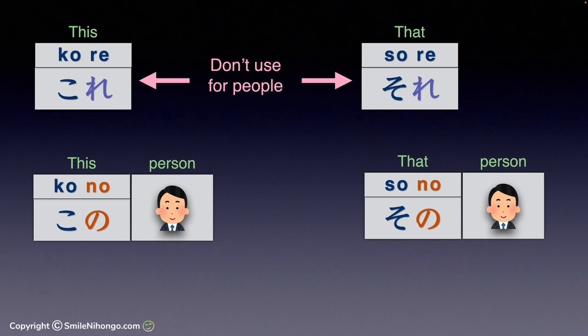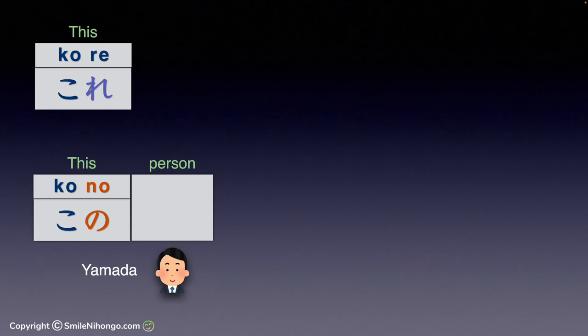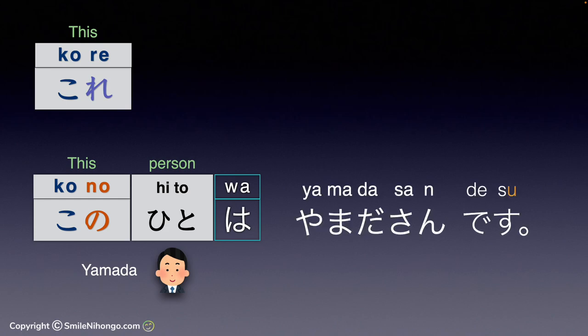Let me explain with an example. Let's say this is your neighbor 山田さん and you are about to introduce him to your friend. Here, you shouldn't say 'これは山田さんです.' Instead, you must say 'this person is 山田さん' — この人は山田さんです. Person in Japanese is 人.